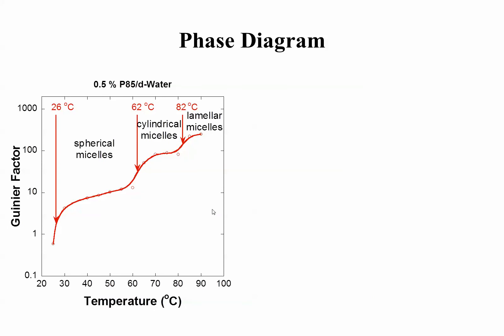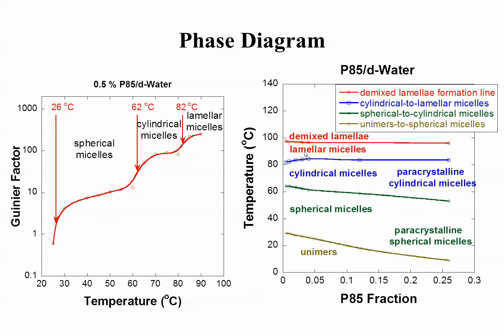The phase diagram can be constructed just by looking at intensity at low Q versus temperature, you get these plateaus: unimers, spherical micelles, cylindrical micelles, and so on. Actually, this was for one volume fraction, we changed the volume fraction, things change slightly. So, you get the phase diagram, temperature versus volume fraction.